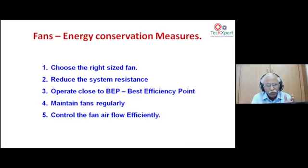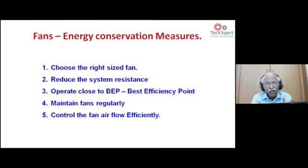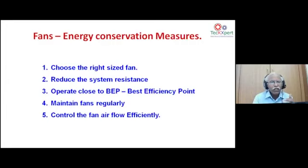The fan performance curve from the OEM shows the best efficiency operating point for the given specifications. We should operate the blower at that best operating point. Fourth is regular mechanical and air-side maintenance. Fifth is efficient airflow control — through VFD, damper, or inlet guide vanes — with an understanding of what each method delivers and what losses each introduces to the system.